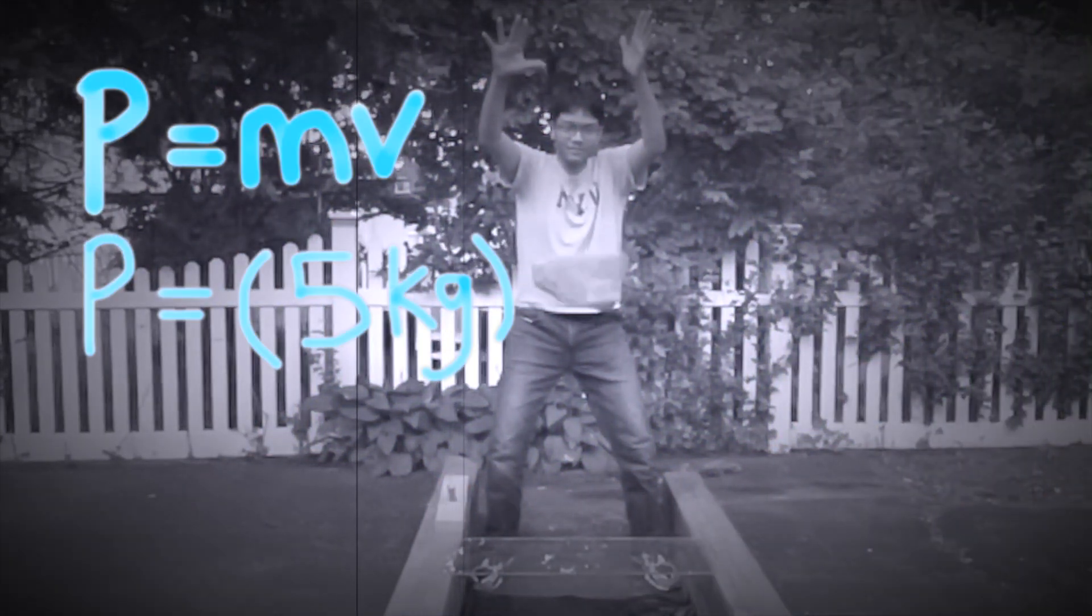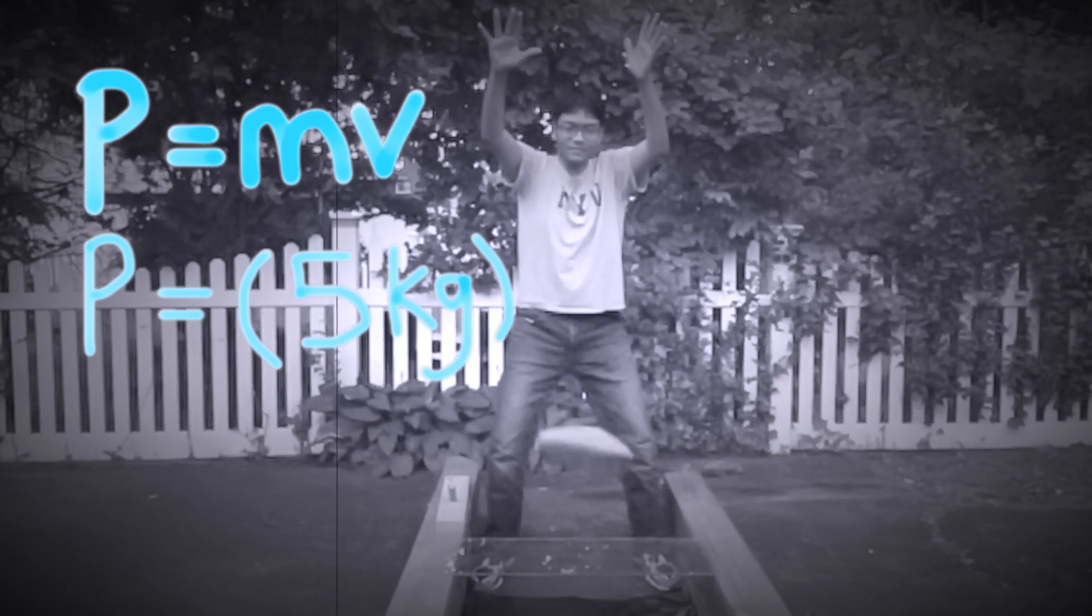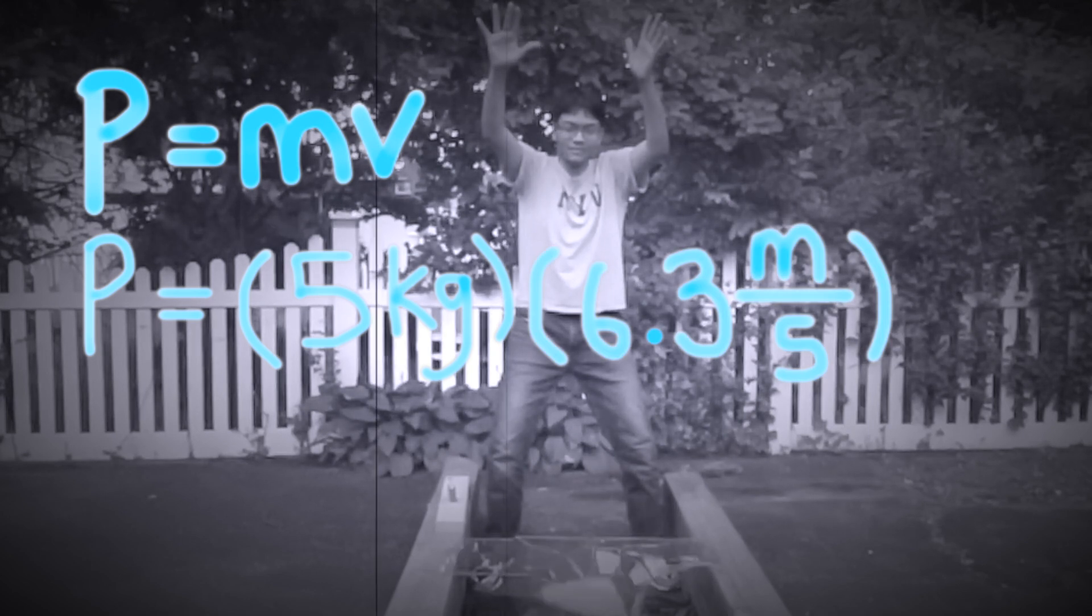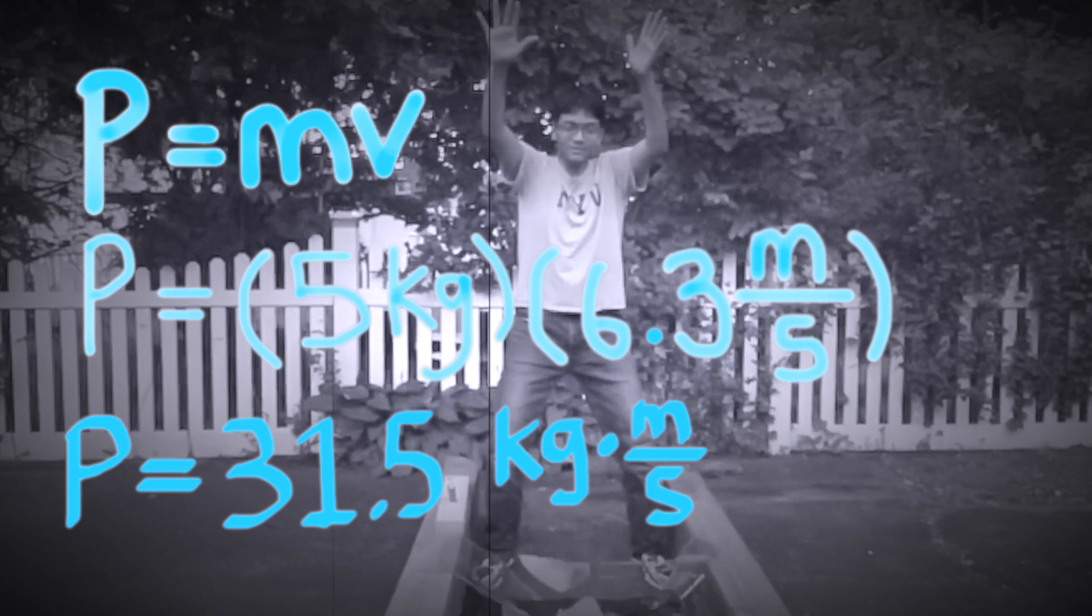The momentum is given by P = MV. The mass is much heavier, so it's 5 kilograms. The velocity is the same, 6.3 meters per second. And so the momentum is going to be 31.5 kilograms times meters per second.